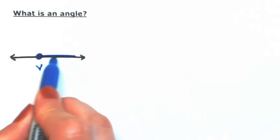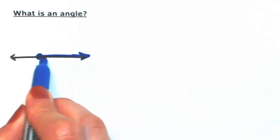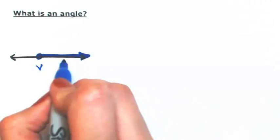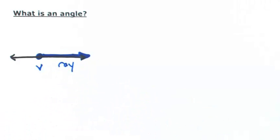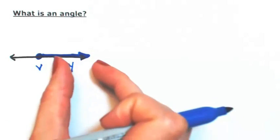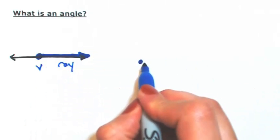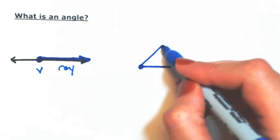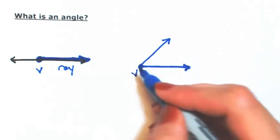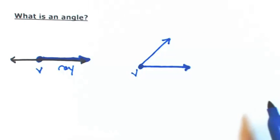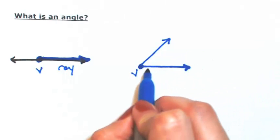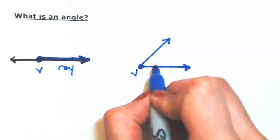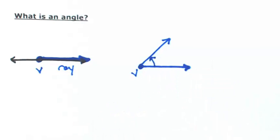So then this part of the line that's extending towards the right is called a ray. Now if I take this ray and add a second one coming from that same point, again we'll call that V, I can identify an angle from that first ray to that second ray.